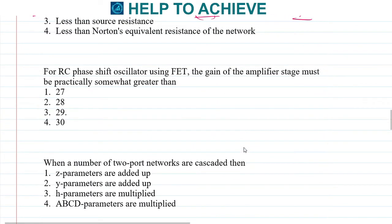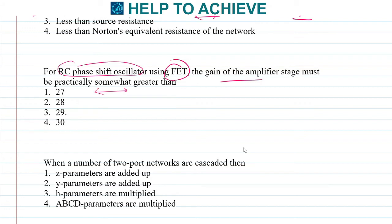Next: for an RC phase shift oscillator, the gain of the amplifier stage must be greater than a specific value. From the basic definition when solving the RC phase shift equation, the gain of the oscillator must equal 29. The correct answer is 29 — remember this as a fixed value.